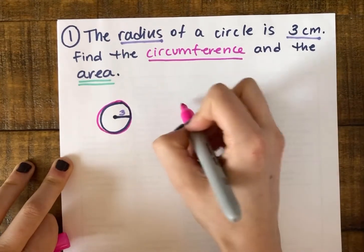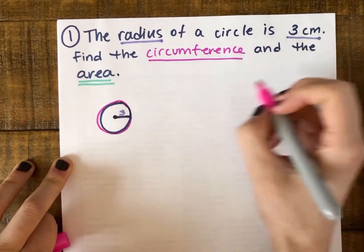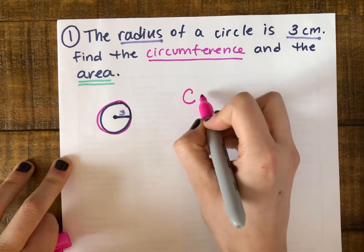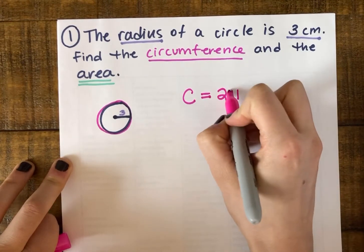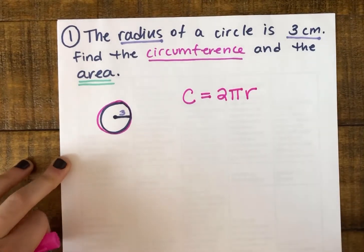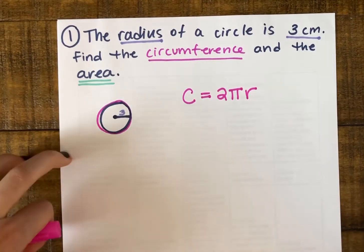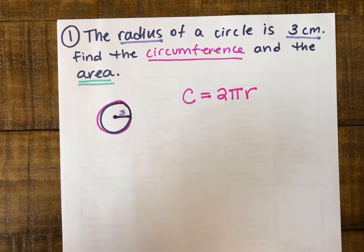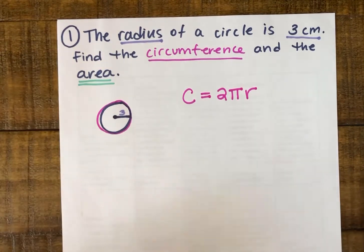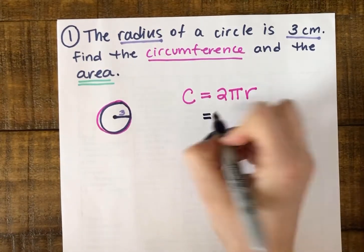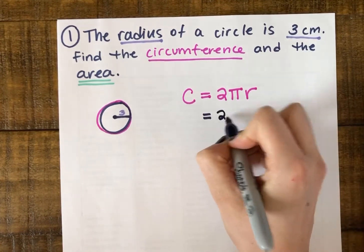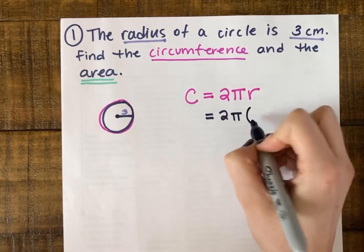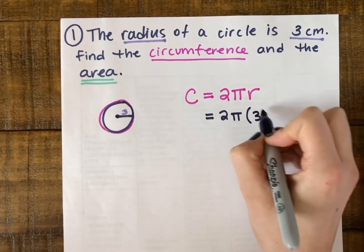All right, so the circumference of the circle is equal to 2πr. I can use that formula to figure out how far it would be around. My circumference is going to be 2 times π times my radius of 3.